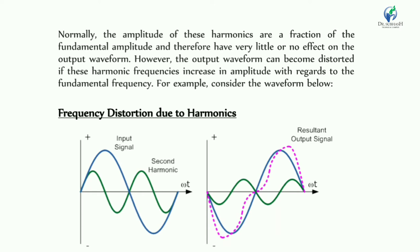There is also a frequency component in the output waveform which will increase in amplitude with frequency. When the harmonic components increase relative to the fundamental frequency, the fundamental frequency will be disturbed and the output waveform becomes distorted.